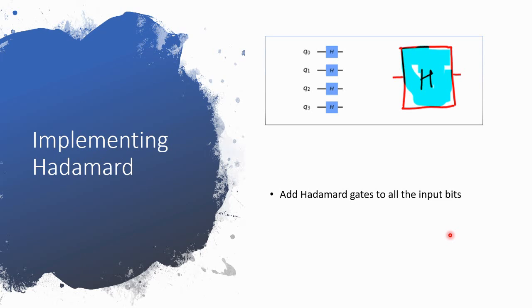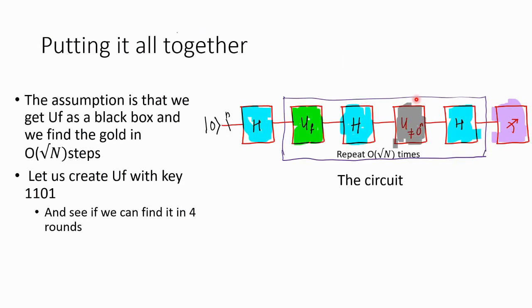Same thing — if it gets a 1, it converts 1 into a superposition state where it is both 0 and 1 at the same time. We apply Hadamard gates to all the input bits. With that, we have all three components we need to put everything together.